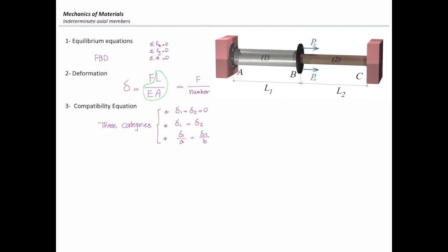In the fourth step, we combine the equations that we get in the first and in the third step, and solve for force. So equilibrium and compatibility are combined together, and we solve for force. Once we get the force, we are done with the difficult part of the problem.